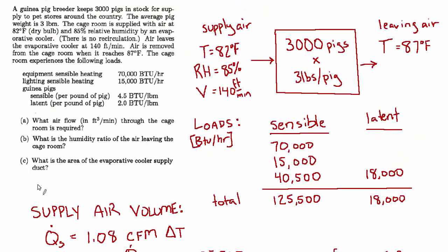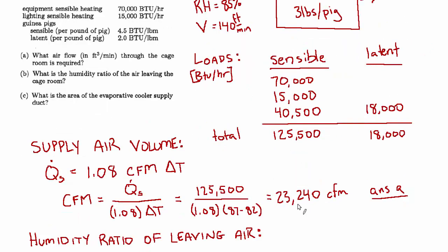For the last question, they ask what is the area of the evaporative cooler supply duct. We know the velocity of the supply air coming through that opening to enter the cage room, and we know the total volume of supply air is 23,240 CFM, so we should be able to figure out the required area.